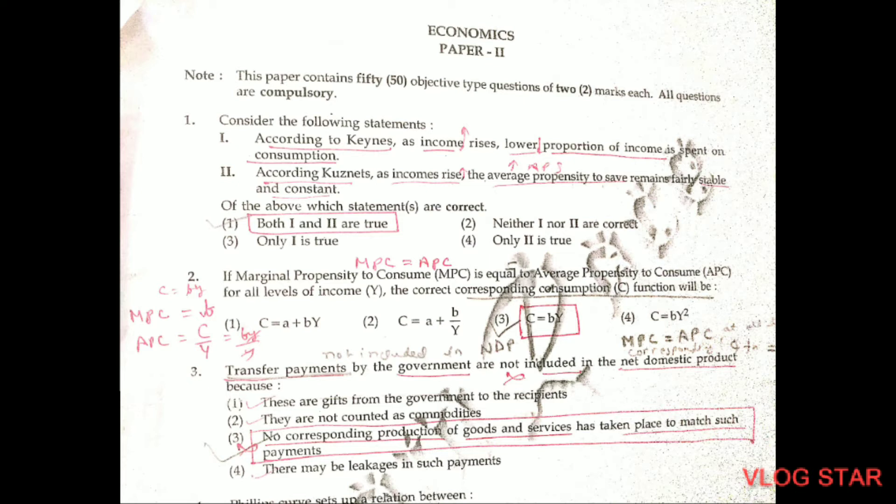Question number 1. Consider the following statements — which of them are correct? Both of them are correct. Because according to Keynes, as income rises, a lower proportion of income is spent on consumption. And also according to Kuznets, as income rises, the average propensity to save (APS) remains stable and constant.